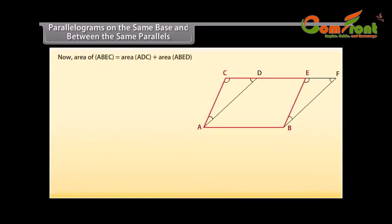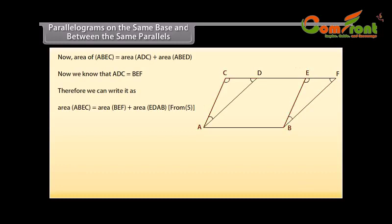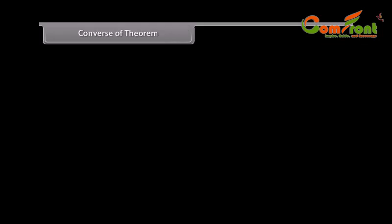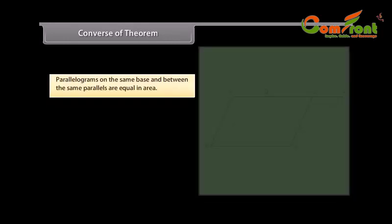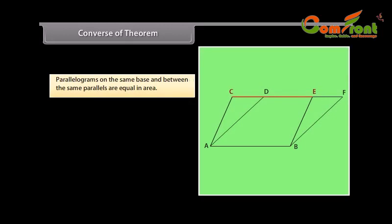Now, area of ABEC is equal to area of ADC plus area of ABED. We know that ADC is equal to BEF. Therefore, we can write it as area of ABEC is equal to area of BEF plus area of EDAB, which is equal to area of ABFD. So, parallelograms ABEC and ABFD are equal in area. Hence, we have proved that the parallelograms on the same base and between the same parallels are equal in area.